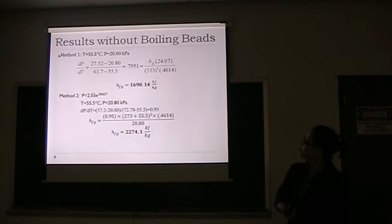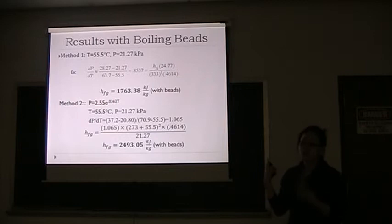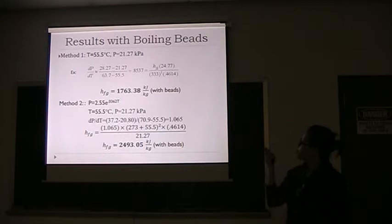These are the two methods I used to get the numerical value of the latent heat. For dP/dT, I set T1 equals 55.5 Celsius and got the relative pressure. So we can get dP/dT as 0.8537, giving a latent heat of 1763.38 kJ/kg.